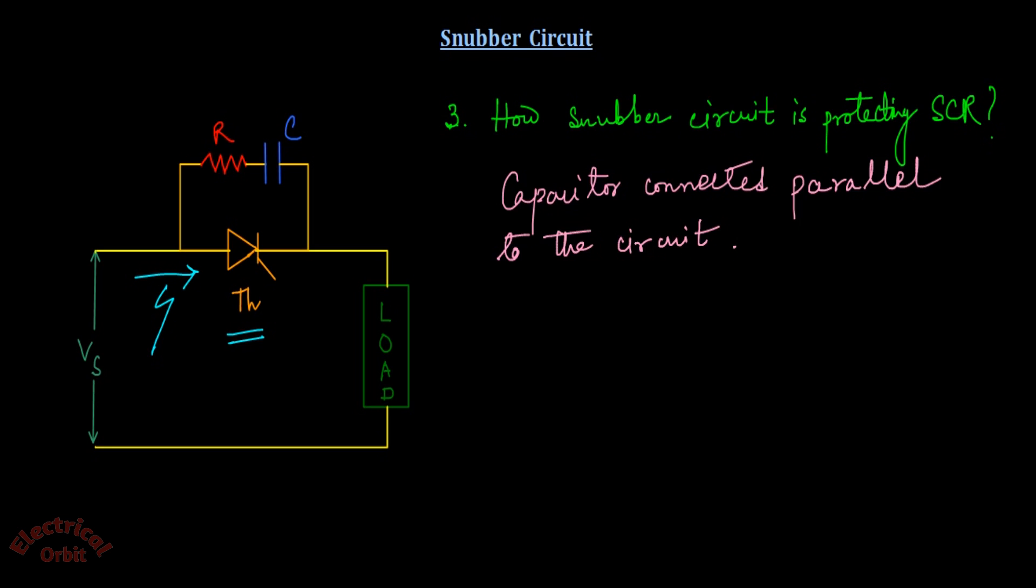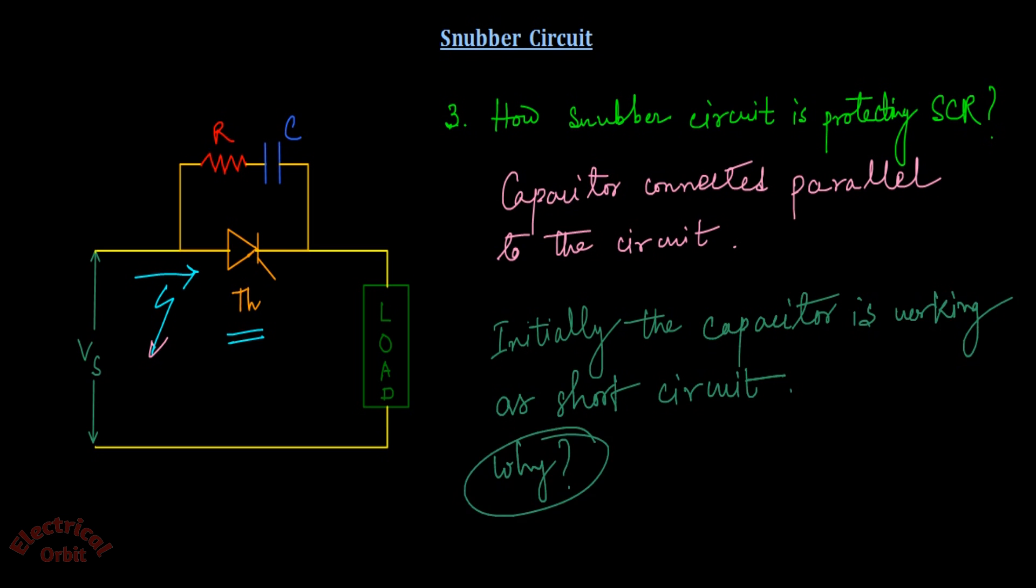Now suppose if a voltage surge or overvoltage appears, then initially the capacitor is working as a short circuit. Why? Because the capacitor always opposes the rate of change of voltage, and during the overvoltage the capacitor works as a short circuit.